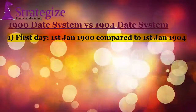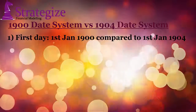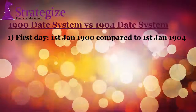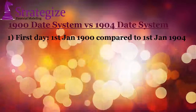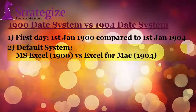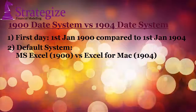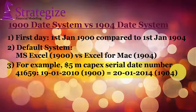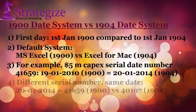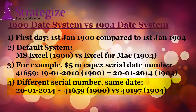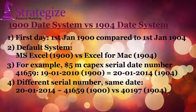Here is a quick explanation of the two date systems. The first date with the 1900 Date System is the 1st of January 1900, whilst it is the 1st of January 1904 for the 1904 system. The default date system is 1900 in Microsoft Excel, but Excel for Mac applies 1904. A serial date number of 41659 computes to two differing dates under the two date systems. Hence, a certain date — for example, the 20th of January 2014 — is denoted by a different serial number under the two date systems.